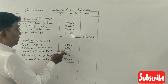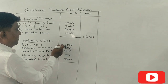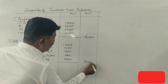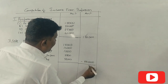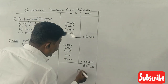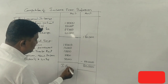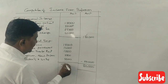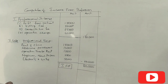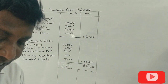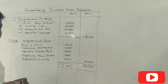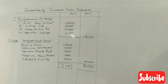Five plus five is ten, twenty, thirty, forty, plus one — total professional expenses are 50,000 rupees. Therefore, income from profession is 80,000 rupees. This is a six-mark question, so income from profession gets those 6 marks.